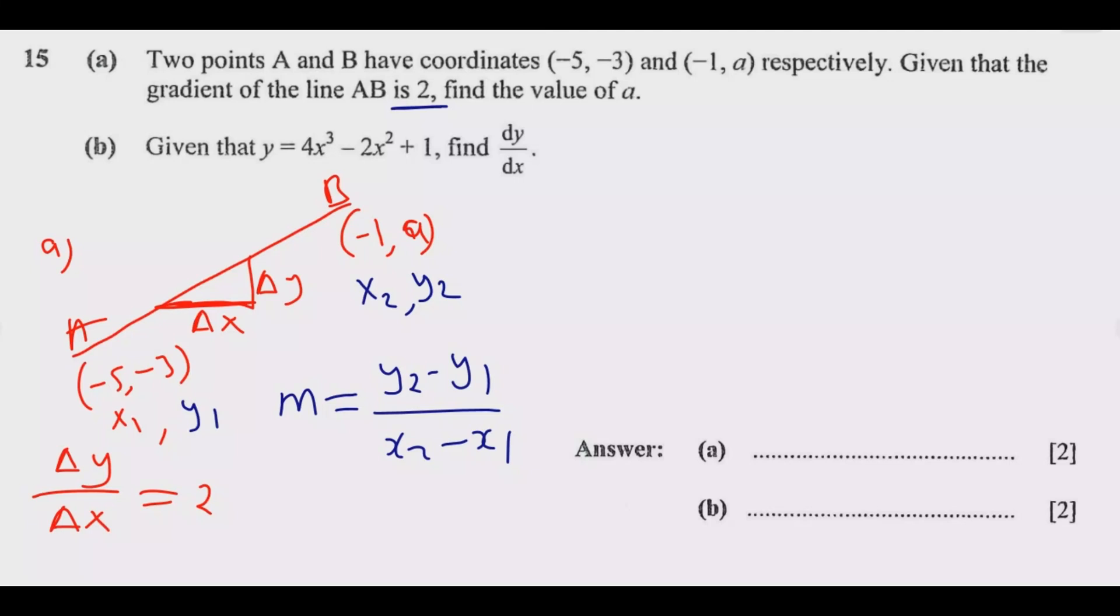So it will be 2 = (y₂ - y₁)/(x₂ - x₁). That's 2 = (a - (-3))/(-1 - (-5)). I can simplify this equation now.